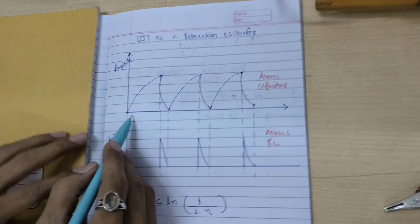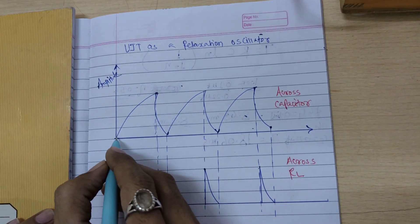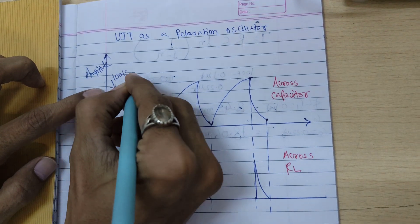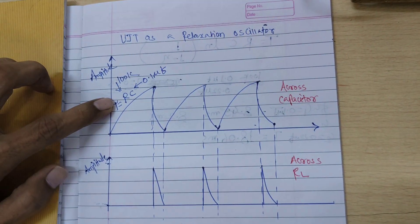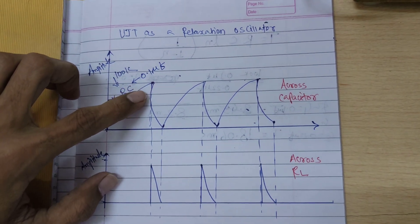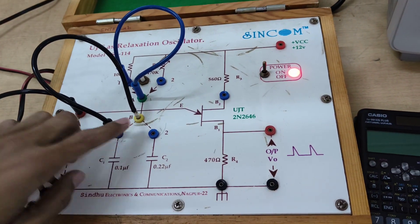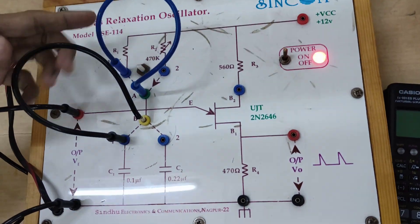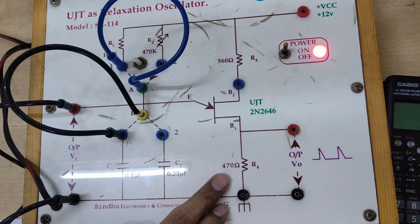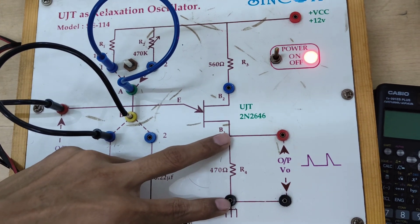If we draw the waveform across the capacitor, when we switch on VCC, the capacitor will get charged for a time R into C, where R is the 100 kilo ohm resistor and C is 0.1 micro farad. Once the capacitor is charged to its full potential, it will try to discharge and find a minimum resistance path. Here the charging resistor is 100K, so the capacitor will discharge through the minimum resistance path which is the 470 ohm resistor.